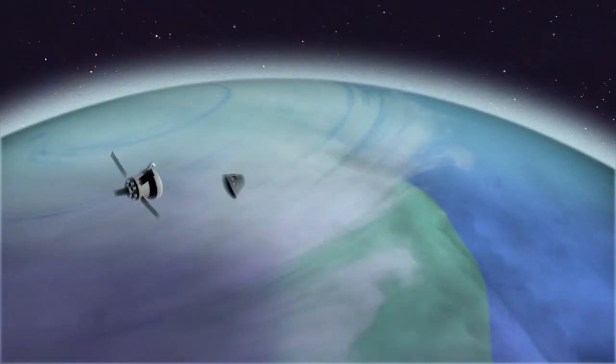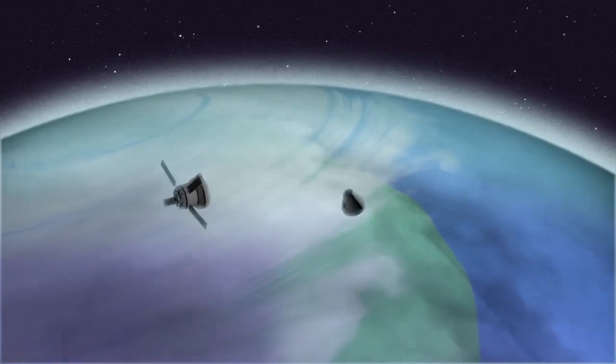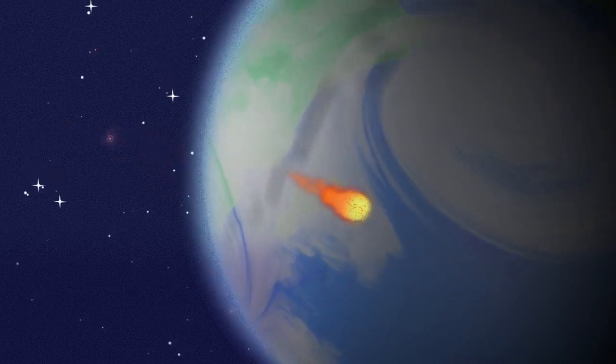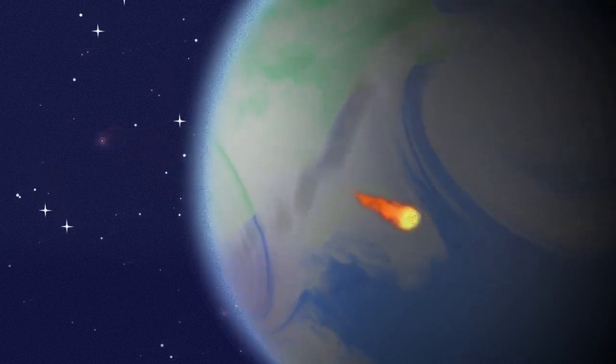Before entering Earth's atmosphere, Orion's service module will separate from the crew module. The crew module will be traveling at a speed of about 25,000 miles per hour when it hits the atmosphere.